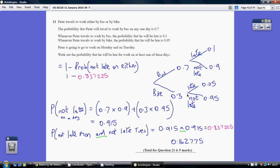and bike and not late, 0.3 times 0.95. So, it's either this or this, so we add them together. So, the probability that he is not late on a single day is 0.915.